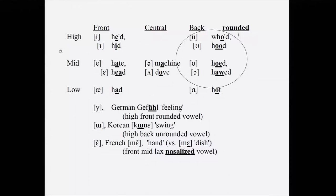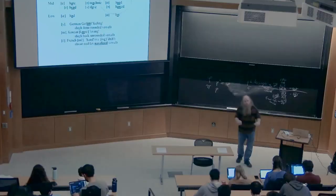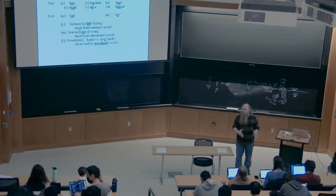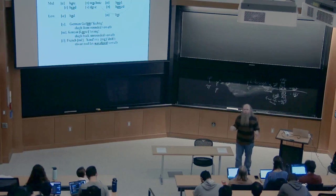There's also rounding harmony, where a suffix's roundedness is determined by the roundedness of the attached vowel. Categorizing vowels as front or back isn't just a fun exercise — it lets us understand Turkish: what's going on is harmony for front versus back.